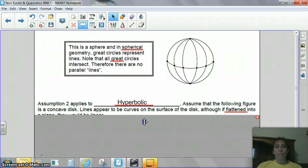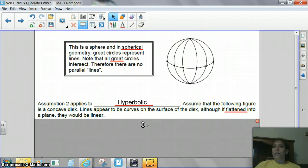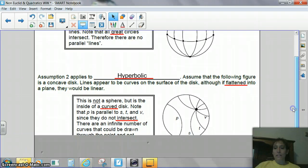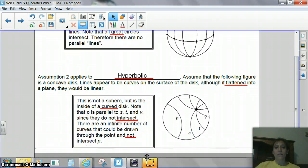Hyperbolic is a figure that looks like a concave disc. Now, we have not talked about concave yet, but concave kind of means it goes inward. So, it would sort of look like a bowl or the inside of a plate. It sort of curves. It goes downward, but it curves up on the sides. Okay. And it says that lines appear to be curves on the surface of the disc. Although, if flattened onto a plane, they would be linear. So, here's a picture of what it looks like. And like I said, it's a disc. You need to think of it as a disc. This is not a sphere, but it is the inside of a curved disc.